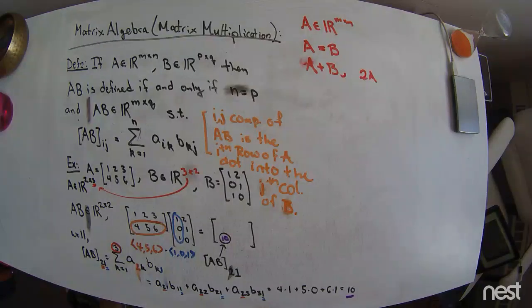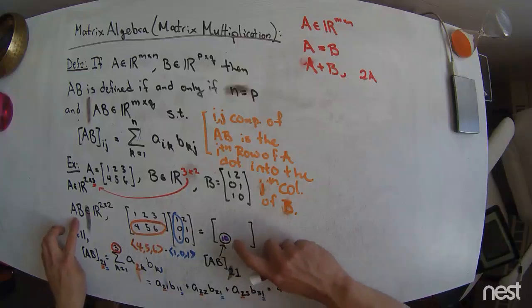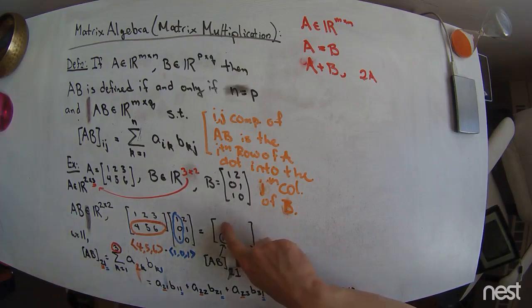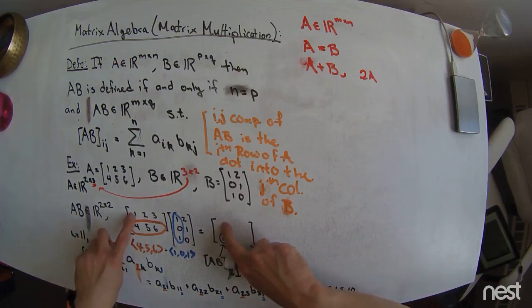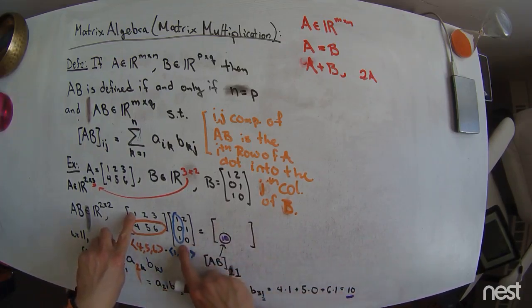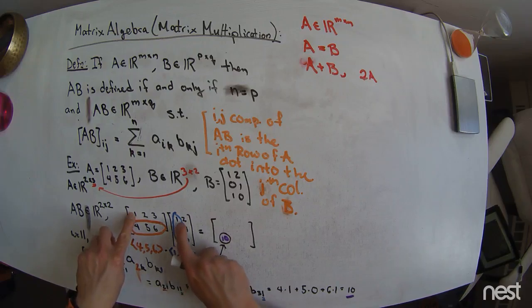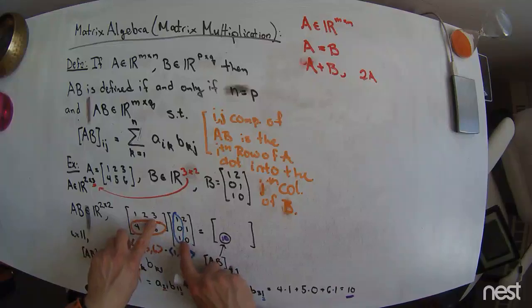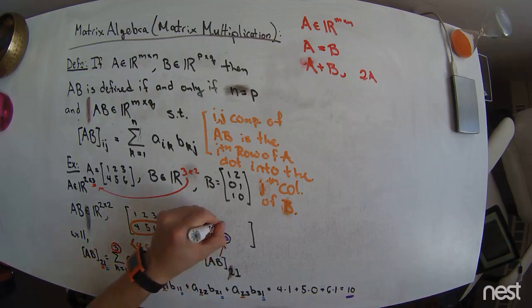But let's first calculate the rest of these. This will be the first row in the first column of this new matrix, AB, and so that should be the first row of A dotted into the first column of B, so that's a 1 times a 1, plus a 2 times a 0, plus a 1 times a 3, so that number should be 4.